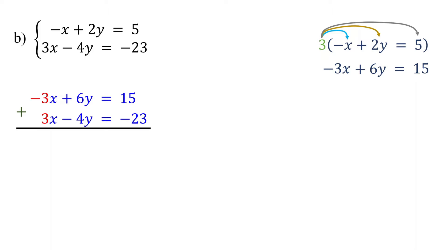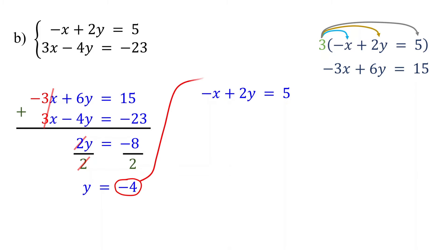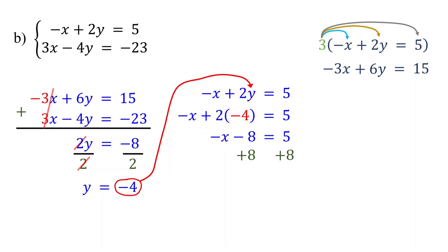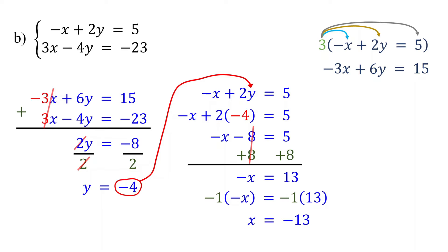The next step is to add these two equations. These cancel out. 6y plus negative 4y is 2y; 15 minus 23 equals negative 8. To isolate y, divide both sides of the equation by 2, and you get y equal to negative 4. The next step is to find the value of x by substituting this value of y into one of the original equations. Let's substitute it into the first equation. 2 times negative 4 is negative 8. Then add 8 to both sides: 5 plus 8 equals 13. Multiplying both sides by negative 1, you get x equals negative 13. Therefore, the solution is (-13, -4).